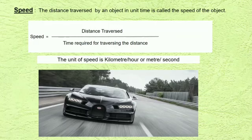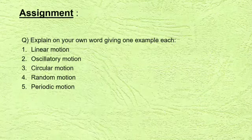Let's know about speed. If we see any vehicle running slow, we say that the speed of the vehicle is slow, and if we see any vehicle running fast, we say that the speed is fast. So, the distance traveled by an object in unit time is called the speed of that object. To find the speed of any moving object, we use the ratio of distance and the time required to cover the distance. The formula of speed is: speed equals distance traveled divided by time required for traveling the distance. The unit of speed is km per hour or meter per second. Copy down the following assignment.